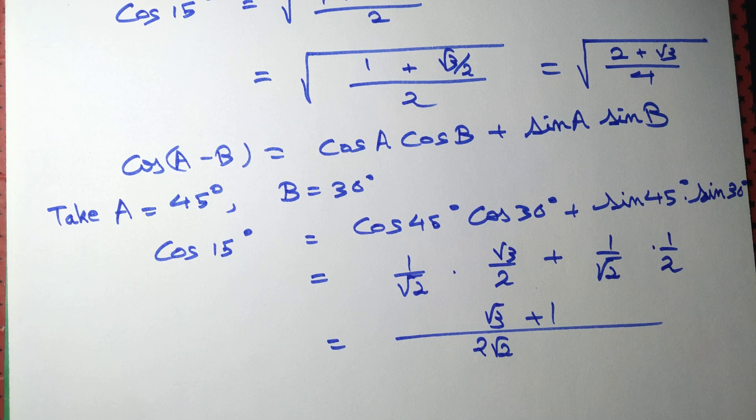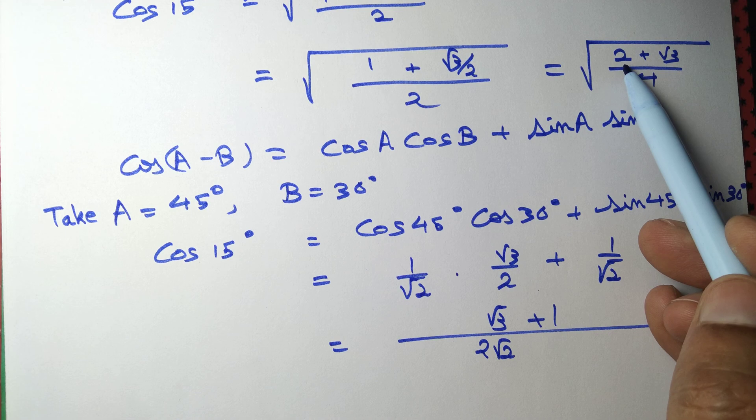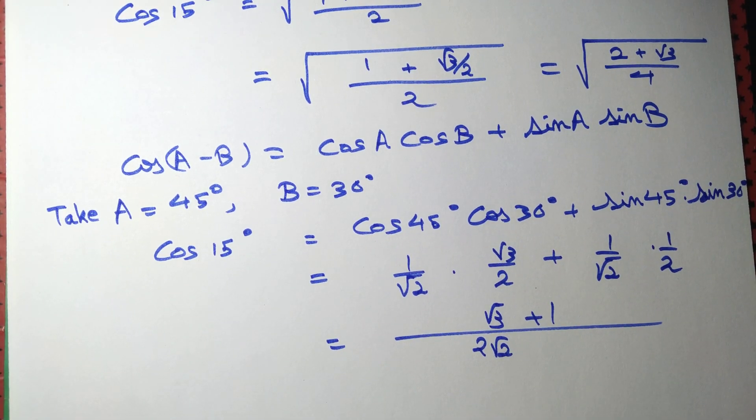We're getting something different. Here we have √((2+√3)/4) from method one and (√3+1)/(2√2) from method two. Which one is correct? Both are correct!